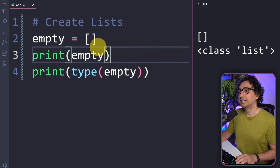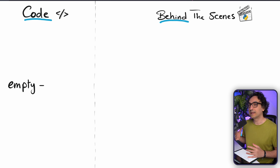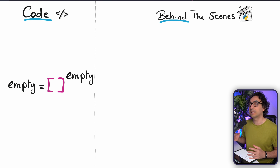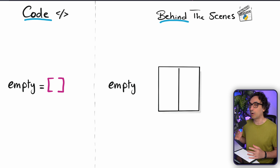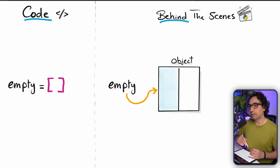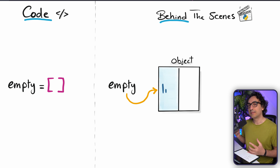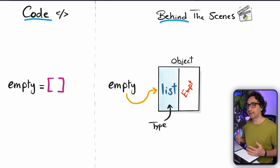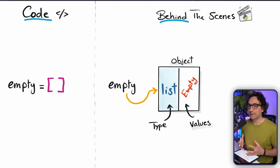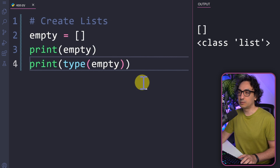Behind the scenes, Python creates an object in memory and our variable points to that object. The type of this object is a list, but it still doesn't have anything inside it, so it is still empty.